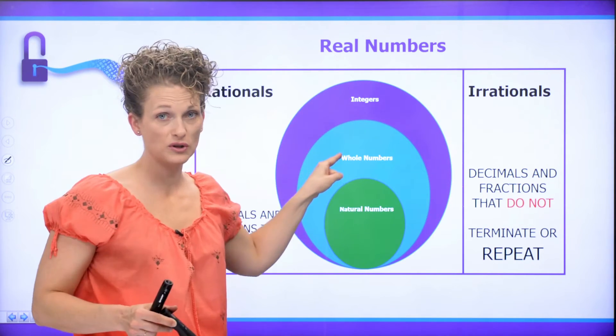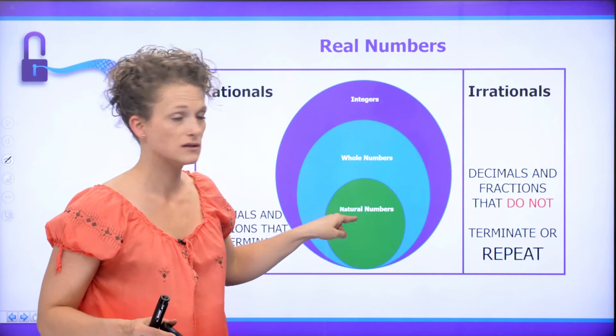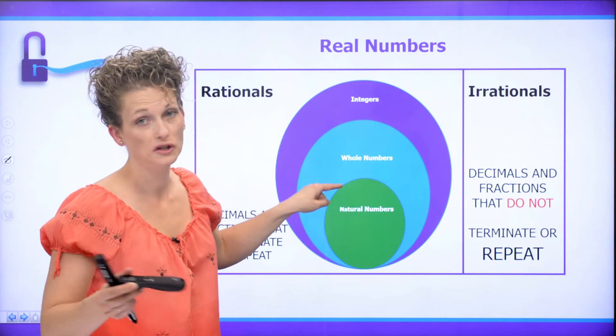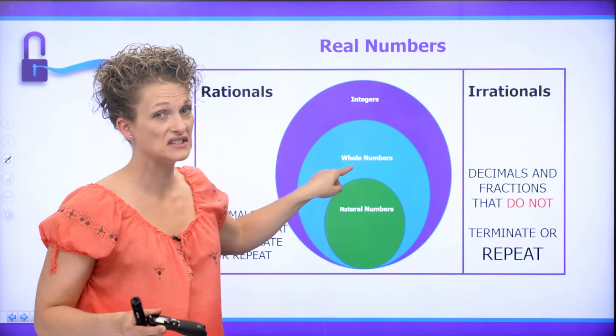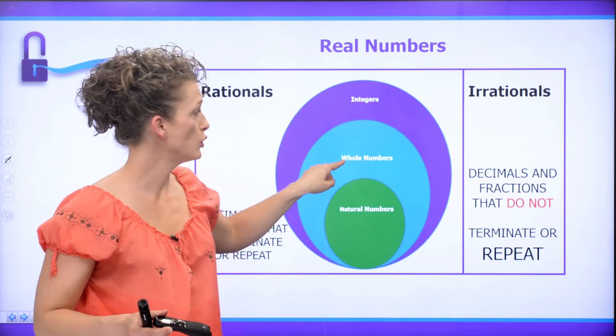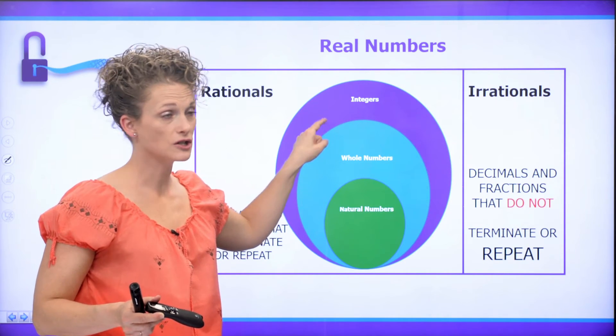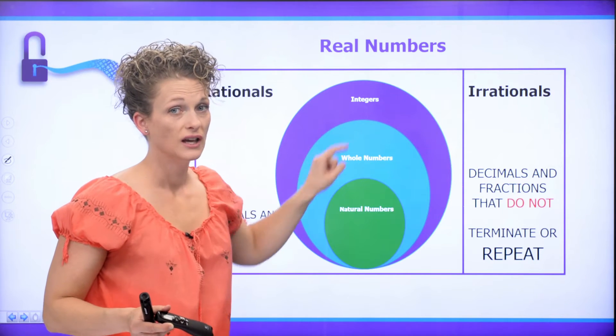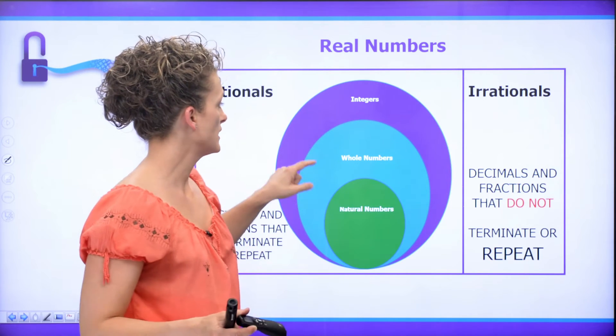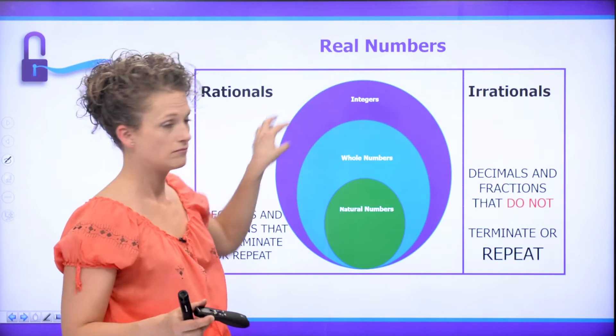If a number is a whole number, it's not a natural number. Well, it could be. But if it has a zero, then it's just a whole number and it's also an integer. If it's an integer and it's negative, then it belongs in this area.